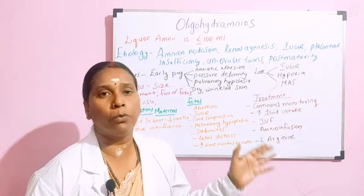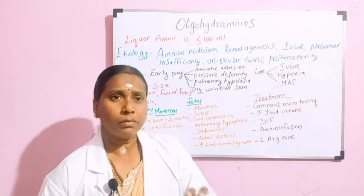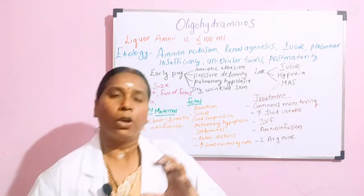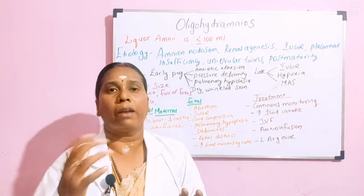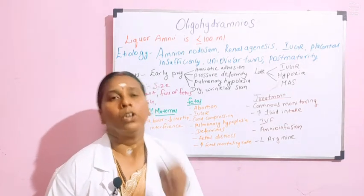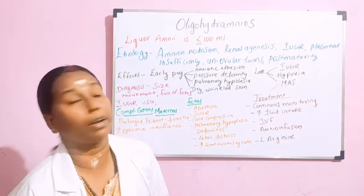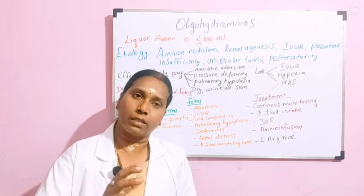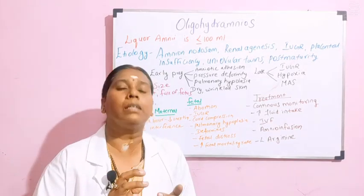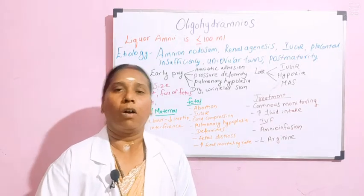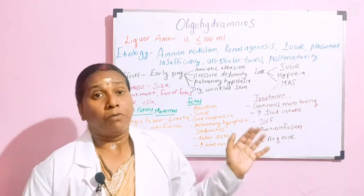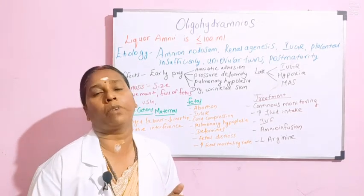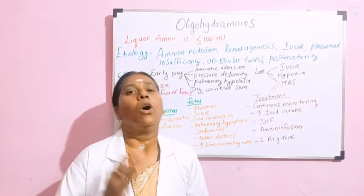Then comes uniovular twins. When there is a condition of uniovular twins, one twin has adequate secretion and the other does not — one is producing more amniotic fluid and one is not producing adequate fluid. That is also a cause in oligohydramnios. And then comes post maturity: when the date has already been completed, there will be a total suppression of amniotic fluid, which can also lead to oligohydramnios.